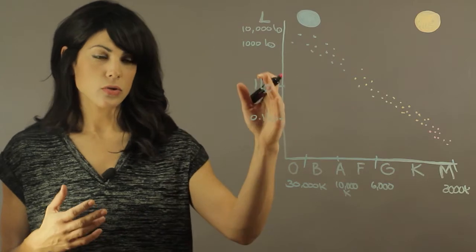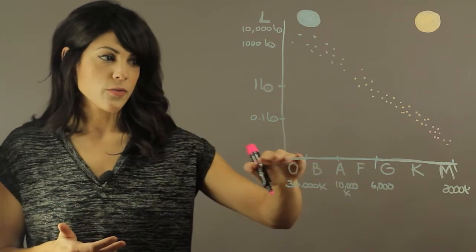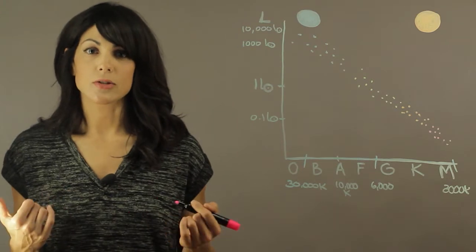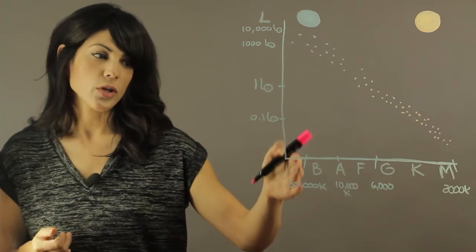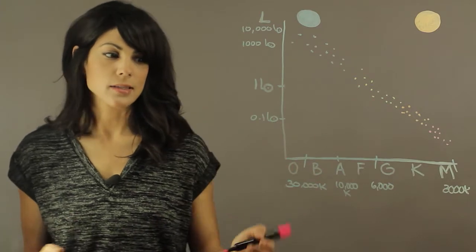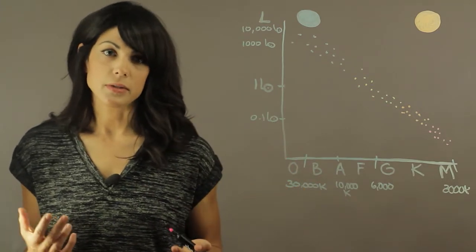A good way to look at this is using the HR diagram. The first axis of the HR diagram is the spectral classes, it can also be looked at in terms of temperature. So over here you have the really hot blue stars, these are the OB class, and these are around 30,000 degrees Kelvin.